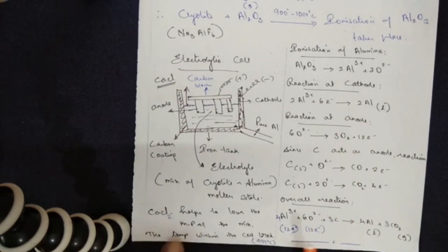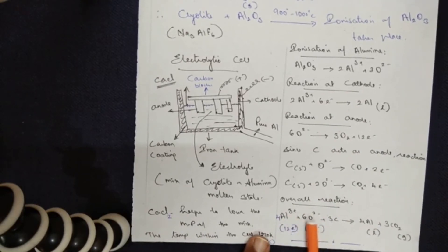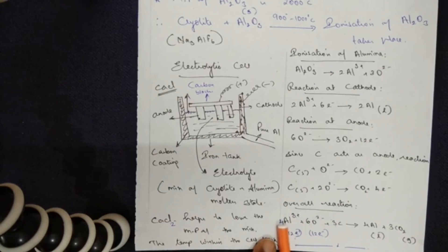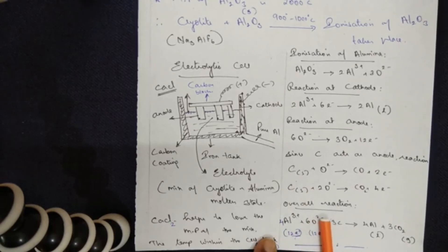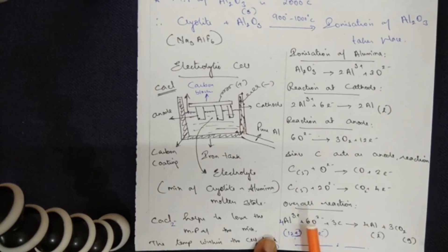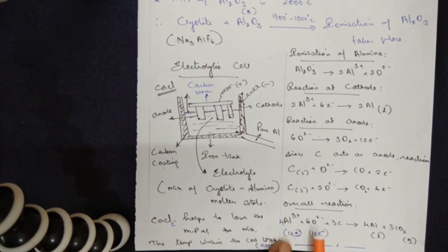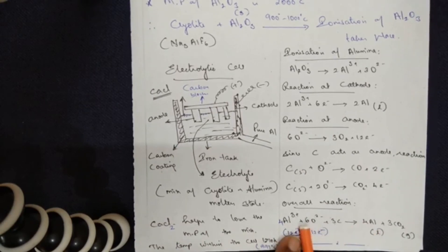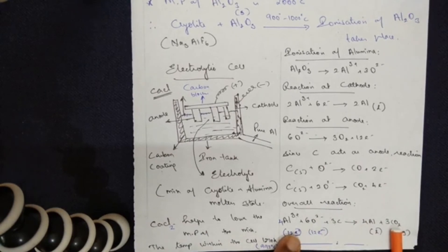The overall reaction is: 4Al³⁺ + 6O²⁻ + 3C → 4Al + 3CO2. In this reaction, 4 aluminium atoms are short of 12 electrons (4 × 3), and 6 oxygen atoms have 12 electrons in excess (6 × 2). These balance each other: pure aluminium is collected at the bottom, and the remaining oxygen combines with carbon to form carbon dioxide gas.